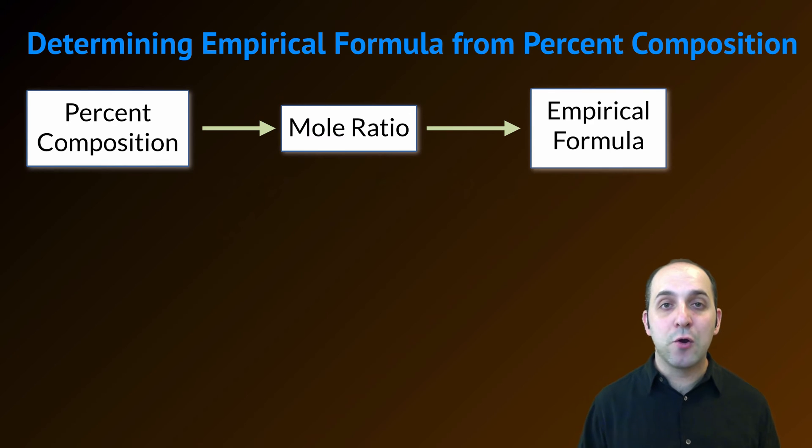We can also figure out the empirical formula from percent composition data. To figure this out, we're going to have to go from percent composition to what's called the mole ratio, and from the mole ratio, we can then figure out the empirical formula. It's not that hard to do.